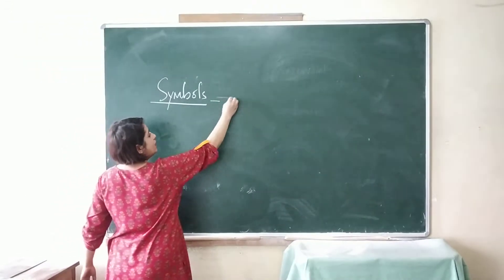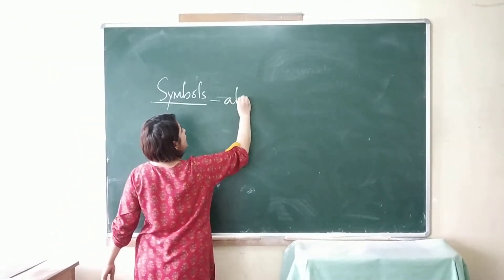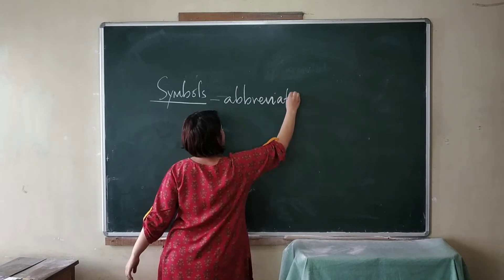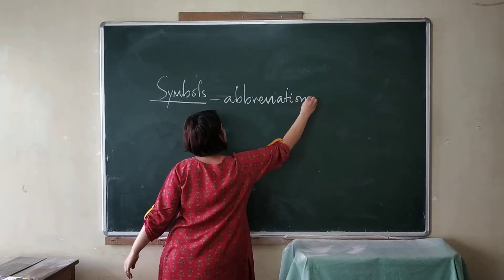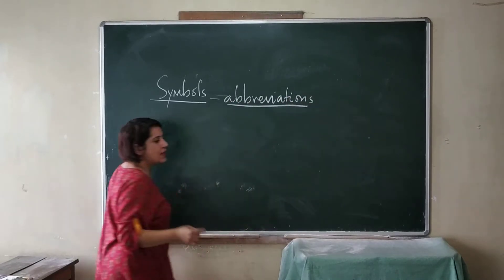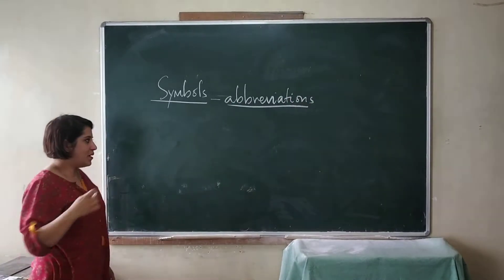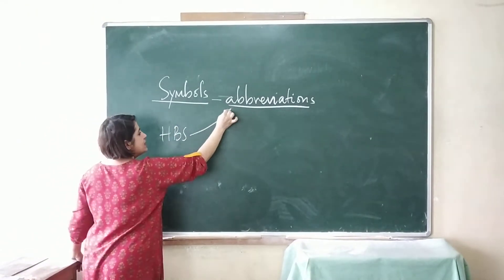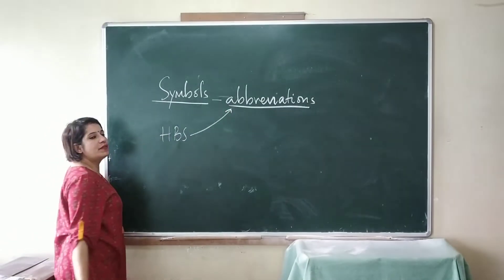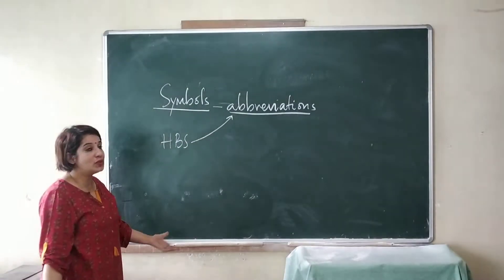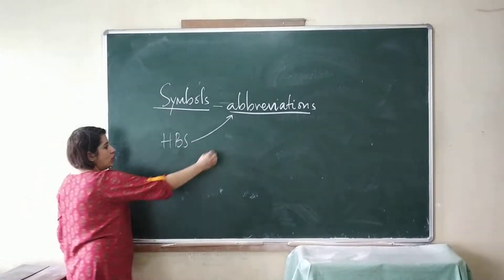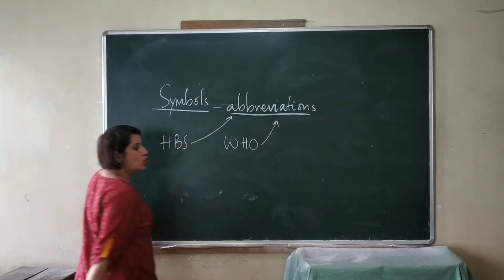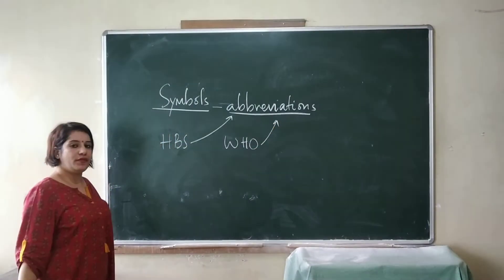Symbols are nothing but abbreviations. For example, Himali Boarding School is abbreviated as HBS. World Health Organization is abbreviated as WHO. These are examples of abbreviations.